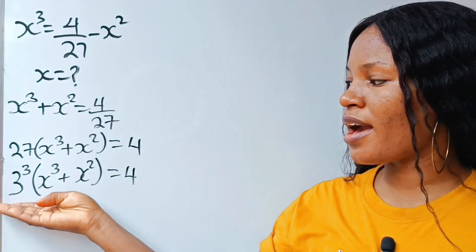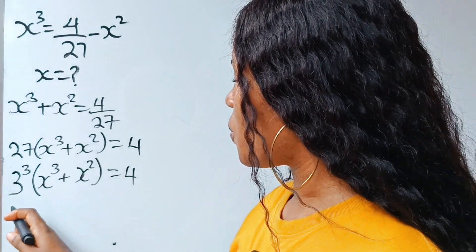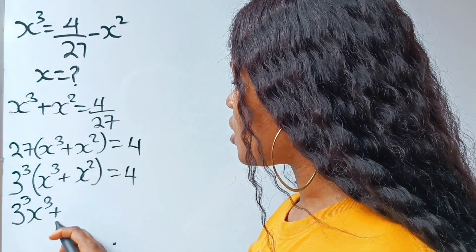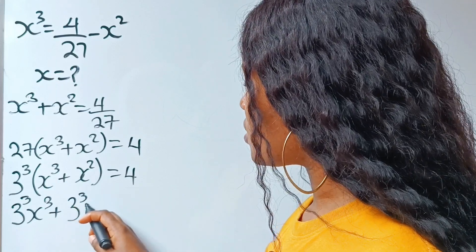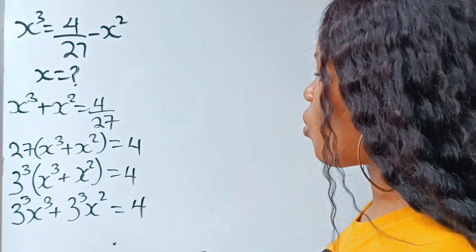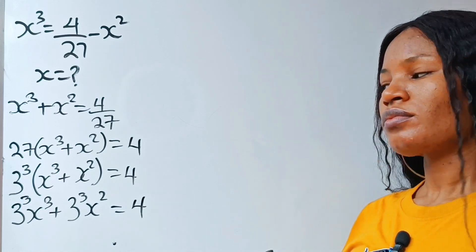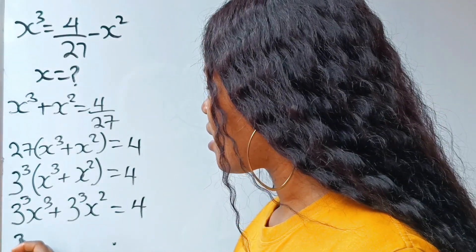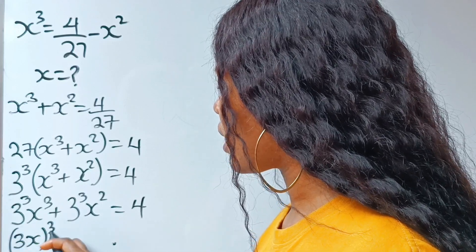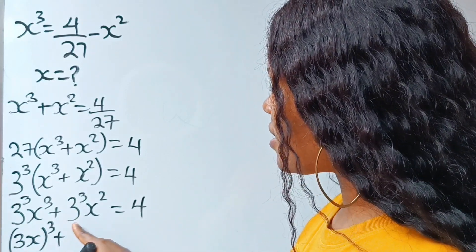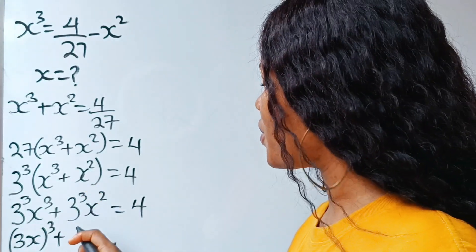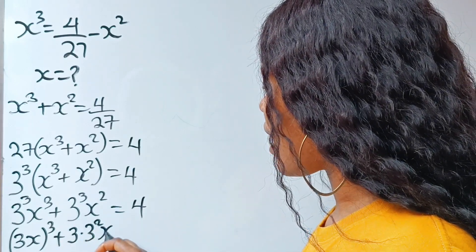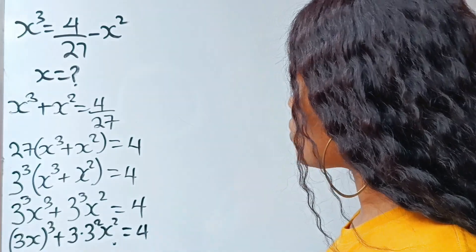Let's go ahead and open this bracket. If we do, we'll have 3 cubed x cubed plus 3 cubed x squared is equal to 4. Now this is the same thing as 3x to the power of 3, plus now this 3 to the power of 3 can be written as 3 multiplied by 3 squared, then x squared is equal to 4.